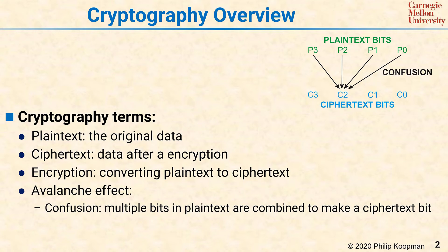The first is confusion. Confusion means that multiple bits in the plain text are combined to make a ciphertext bit. That means that ideally, each bit of the ciphertext output changes if any one of the bits of the input plain text are changed.